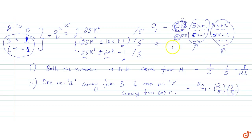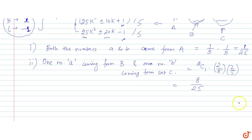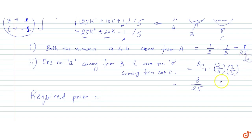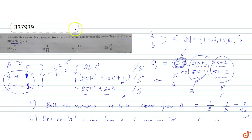The required probability is 1 upon 25 plus 8 upon 25, which equals 9 upon 25. So the correct answer is 9 upon 25.